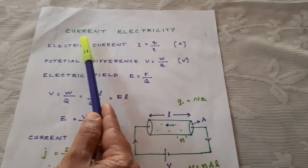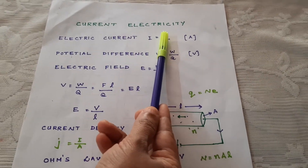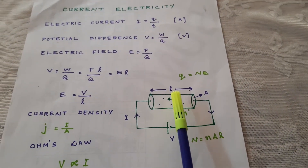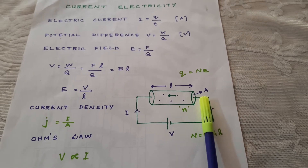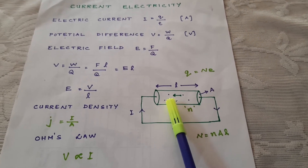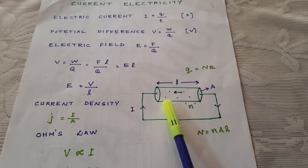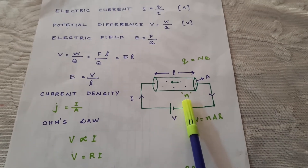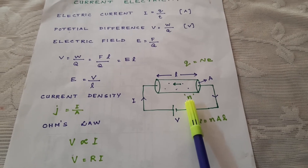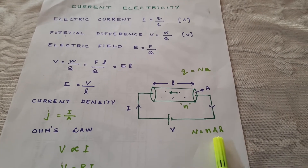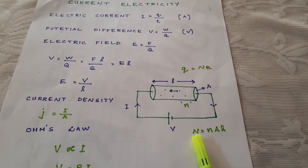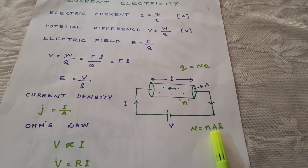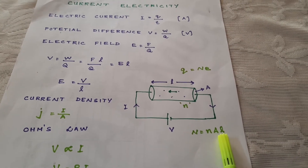In this class, let us learn current electricity. Let us consider a conductor of length L and cross-sectional area A. The conductor has free electrons. Let N be the number density of the free electrons — number per unit volume. So the total number of free electrons is capital N, equal to number density into volume, where volume is area into length of the conductor.